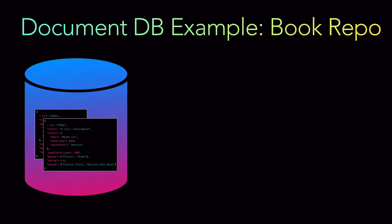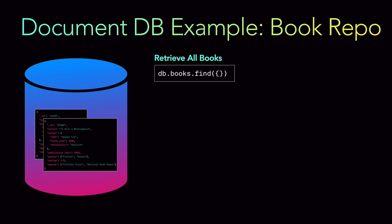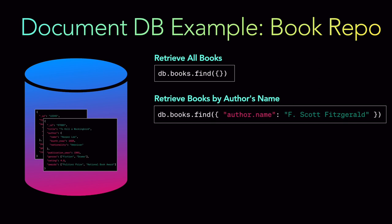This means the same database table can store variable schema formats for the same type of record. In MongoDB, if you want to retrieve all books, you simply do db.books.find() with no parameters. To retrieve books by an author's name, you do db.books.find() with the query parameter author.name equal to whatever value — because author is an object and name is a field within that author object.